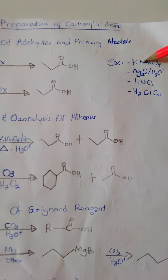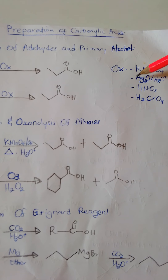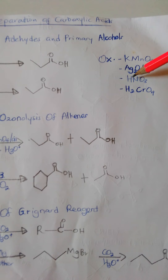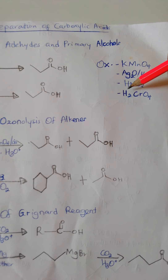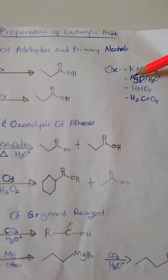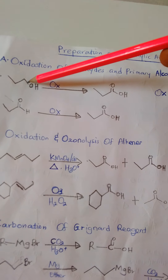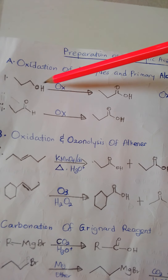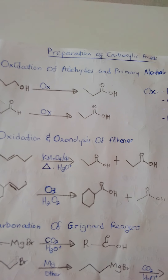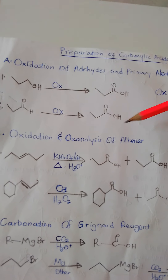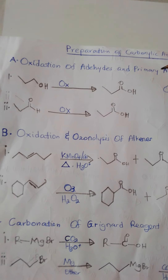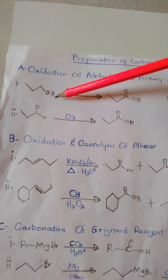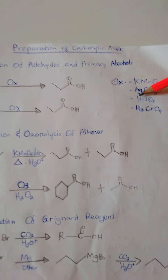In the laboratory, the various oxidizing agents used to convert primary alcohols and aldehydes to carboxylic acids include potassium permanganate, silver oxide followed by hydrolysis, nitric acid, and chromic acid. Bear in mind that secondary alcohols and ketones are not oxidized under mild conditions — only aldehydes and primary alcohols are converted to carboxylic acids using these oxidizing agents.